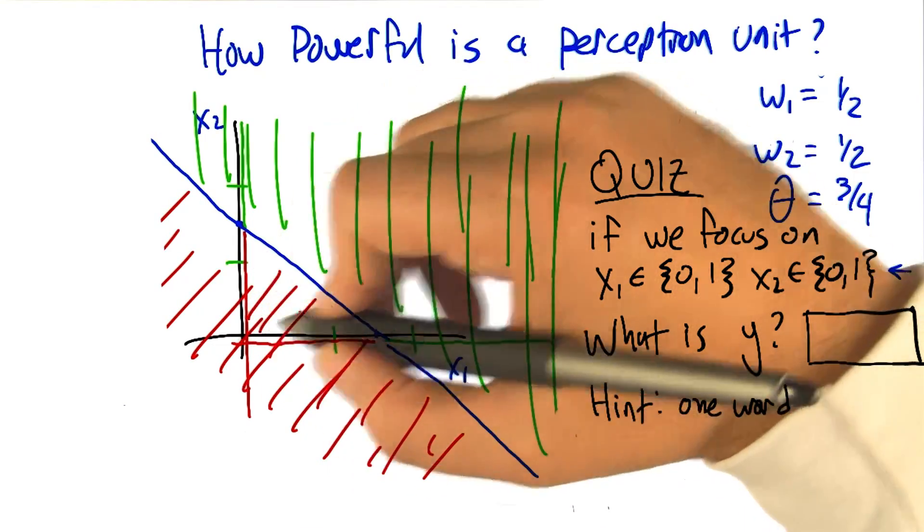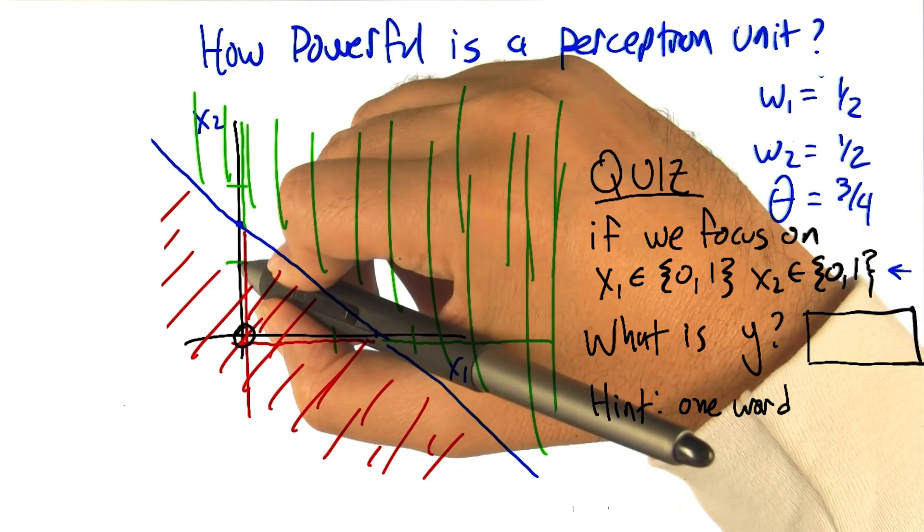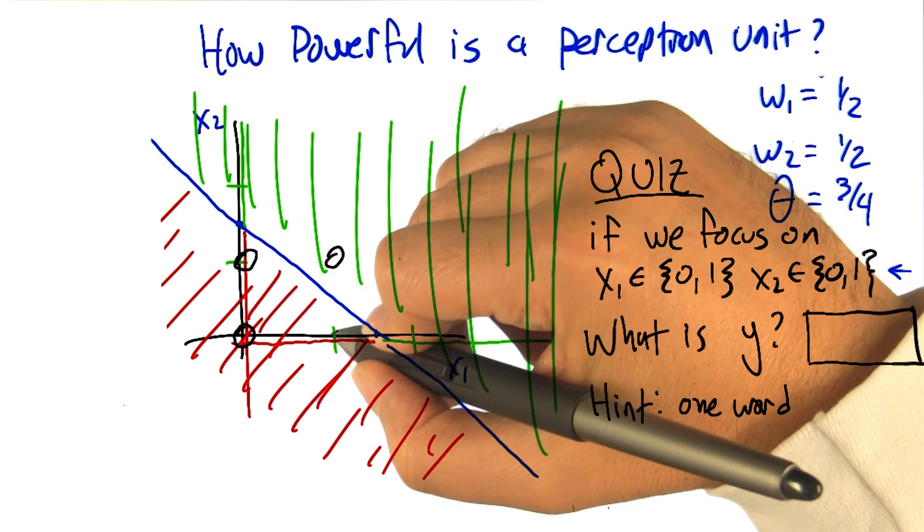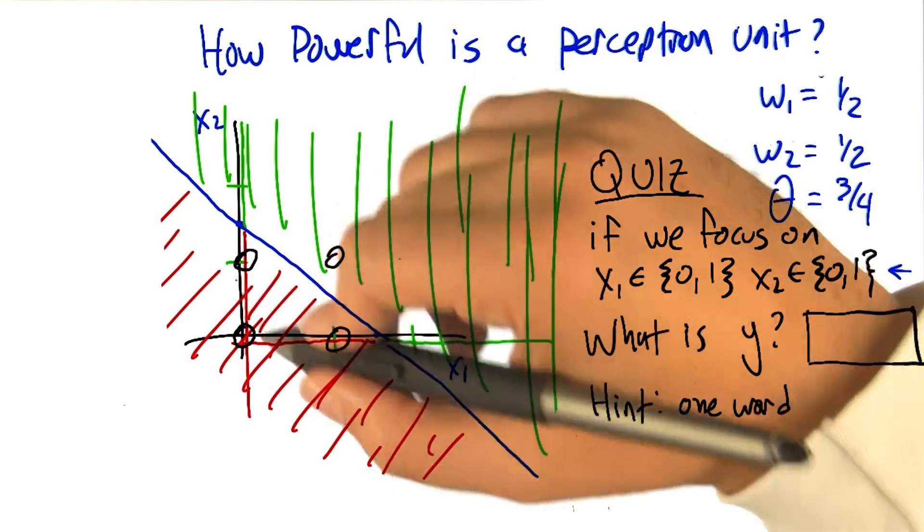All right, so let me mark those on the picture here. We're talking about the only four combinations here, and you're saying in particular that we're interpreting these as combinations of true and false.